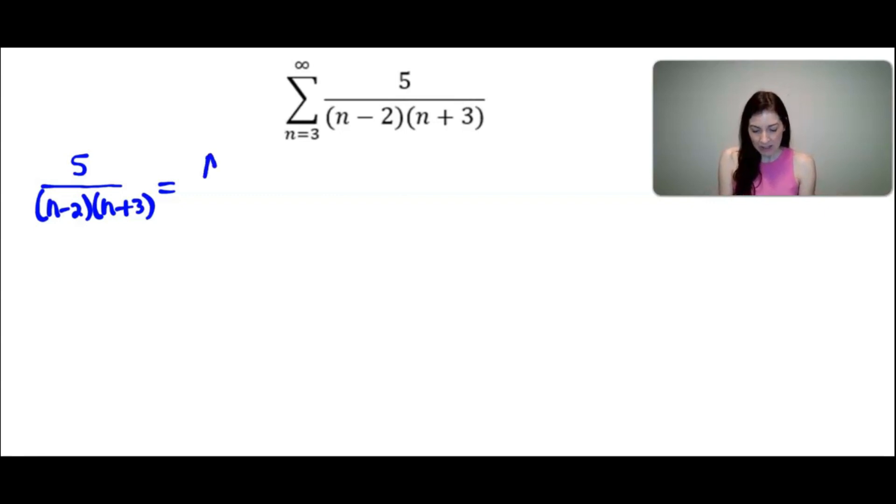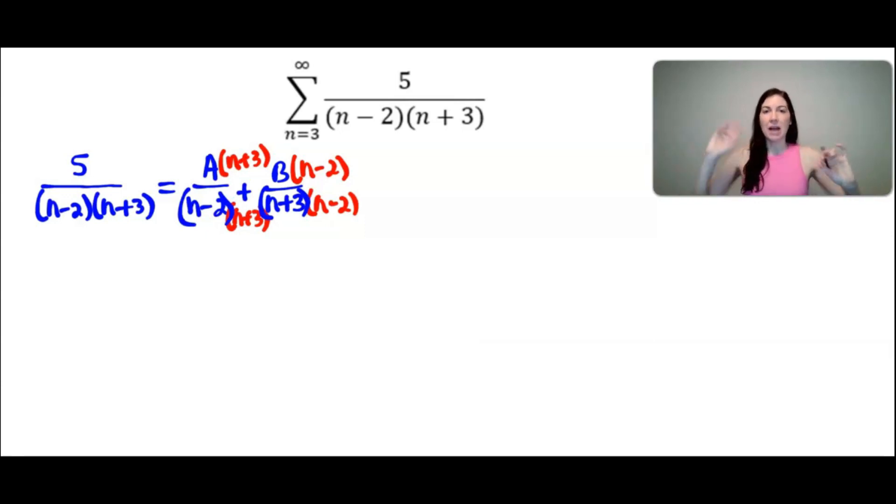The way that I would write it out is that would be the sum of A divided by n minus 2 plus B divided by n plus 3. To me it almost reminds me of undoing the common denominators. So if I wanted to get common denominators, this one would need to have been multiplied by n plus 3, and this one would have needed to be multiplied by n minus 2 in the numerator and denominator. At this point you would see that all of them would have common denominators. So if we multiply both sides by the common denominator (n-2)(n+3), you can see that all of those denominators would cancel. And then I would have 5 equals A(n+3) plus B(n-2).